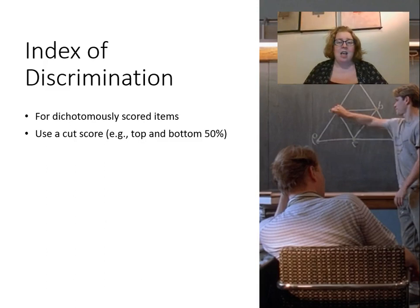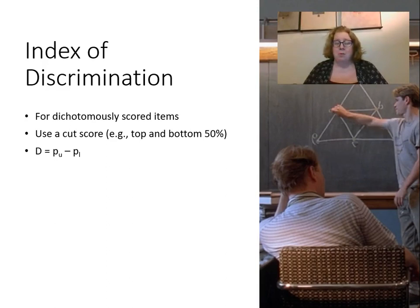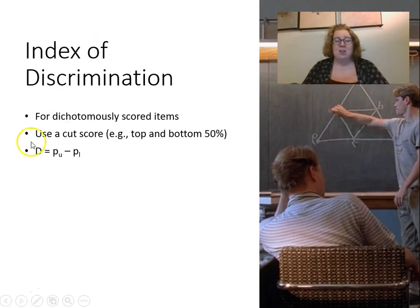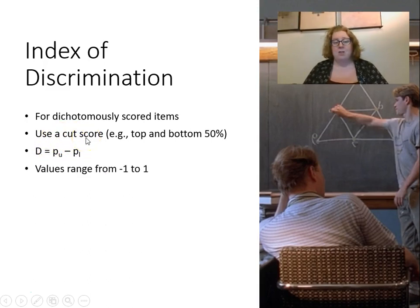For dichotomously scored items, we use a cut score to divide our class in half — the top and bottom 50%, or if I have a really large sample, the top and bottom 25%. The index of discrimination is calculated by finding the proportion of the top half of students who got the item correct minus the proportion of the bottom half who got it correct. Values range from negative one to one: negative one is perfect negative discrimination, one is perfect positive discrimination — meaning everyone in the top half got it right and no one in the bottom half did.